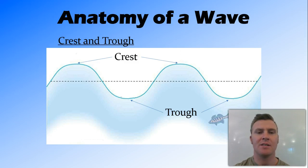Therefore, the crest is the highest point above the midpoint. We have two crests there. The trough, the lowest point below the midpoint, and we have two troughs, so the crest and the trough.